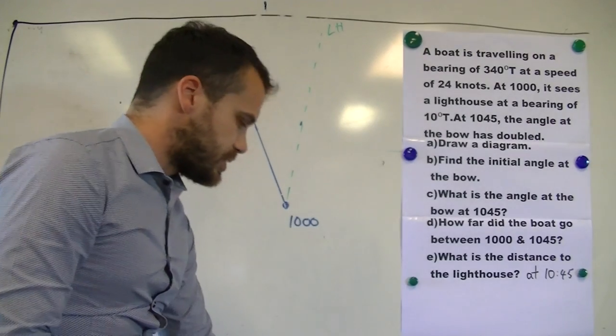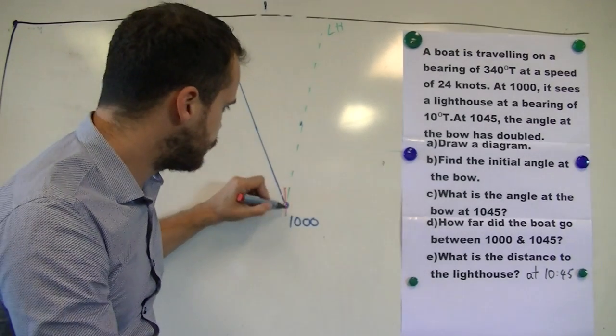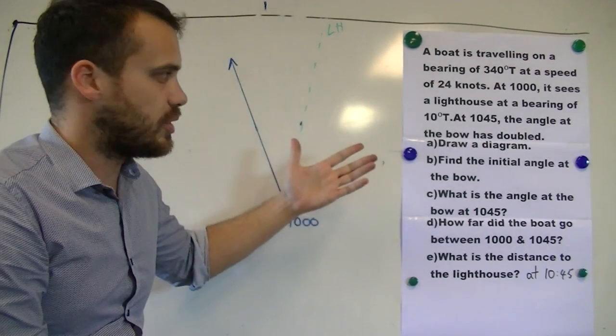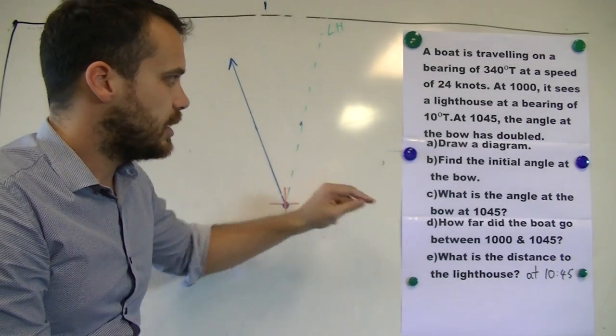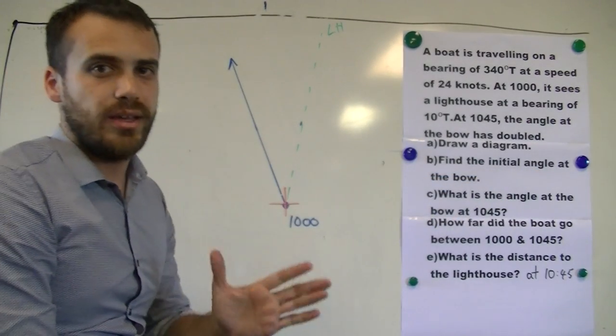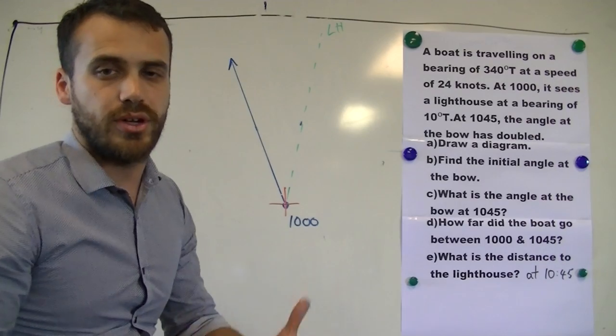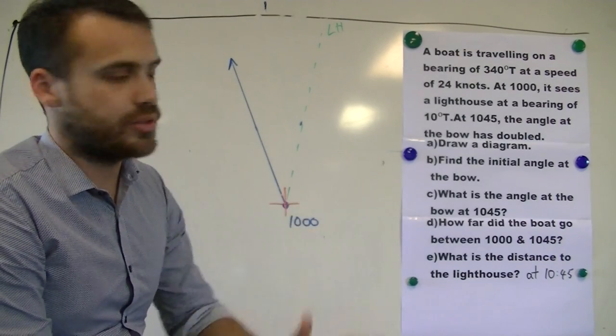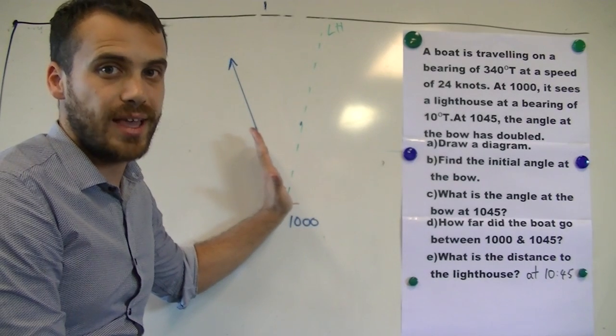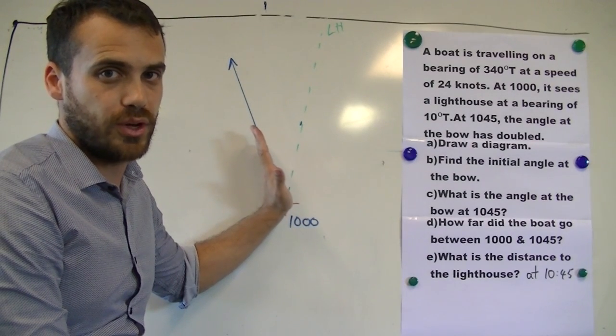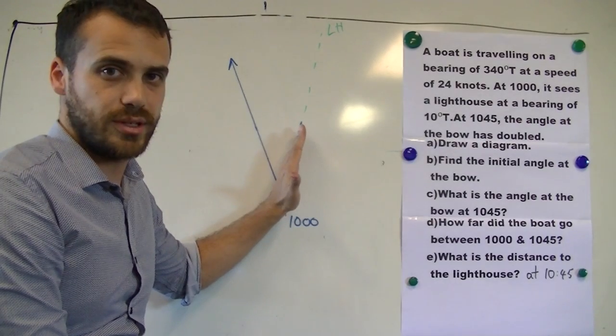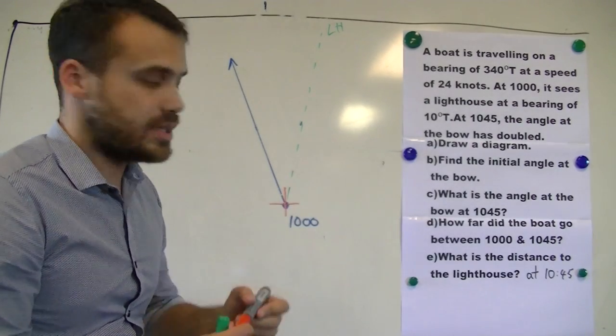This is a pretty good start to our diagram. We need a bit more in this diagram. But while we're here, let's talk about something called the initial angle at the bow. Now the angle at the bow, for those of us who don't know, the bow is the front of a boat. So if that boat is going in this direction, and we want to know the angle at the bow of the lighthouse, it's the angle between this line and this line.